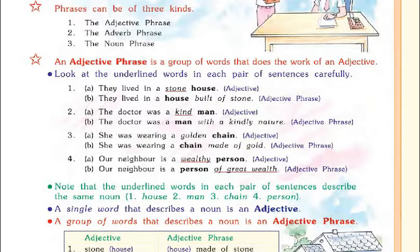Second: 'The doctor was a kind man.' The underlined word 'kind' is an adjective. The adjective phrase is: 'The doctor was a man with a kindly nature.' Third: 'She was wearing a gold chain.' The adjective phrase is: 'She was wearing a chain made of gold.' Fourth: 'Our neighbor is a wealthy person.' The adjective phrase is: 'Our neighbor is a person of great wealth.'